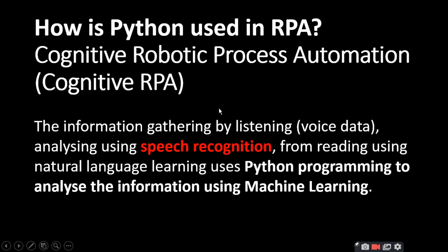How is Python used in RPA? In Intelligent Robotic Process Automation, Python is used for information gathering by listening to voice data, analyzing using speech recognition, reading using natural language processing, and using machine learning to analyze information.